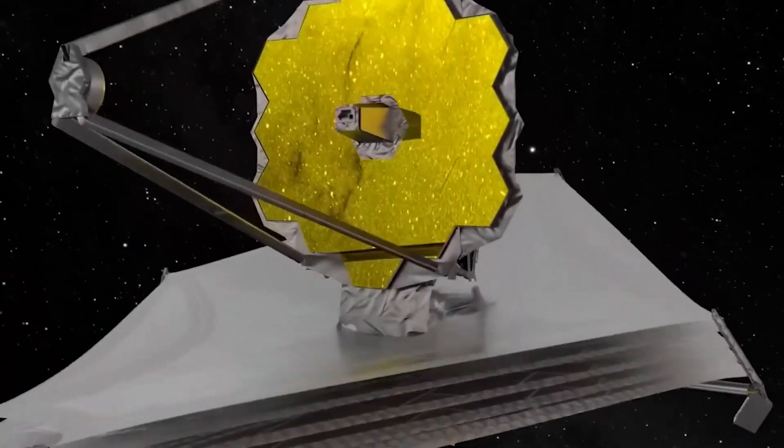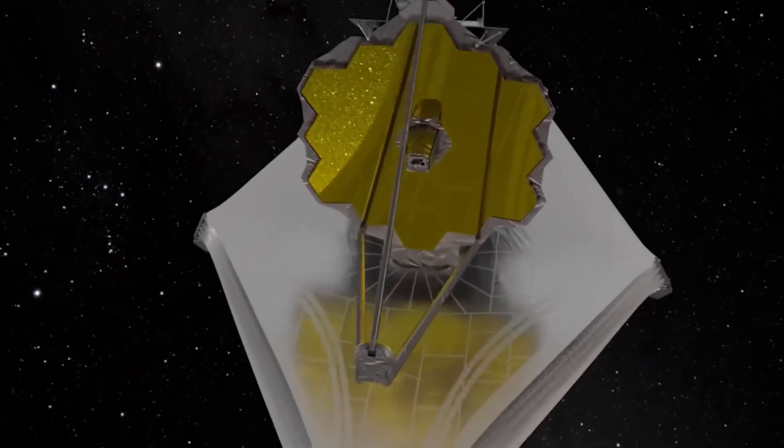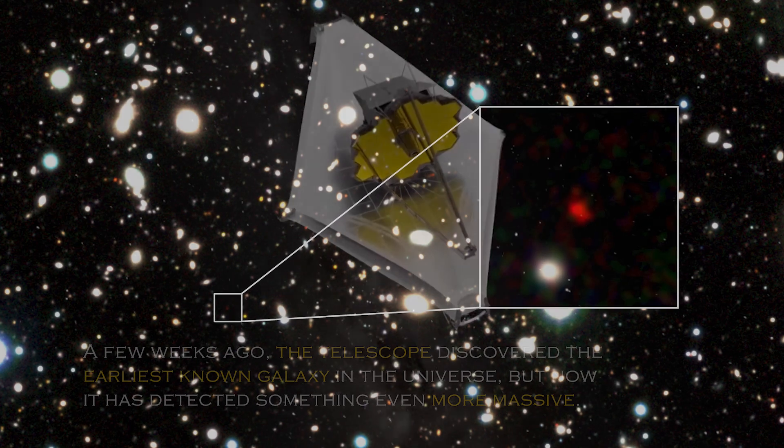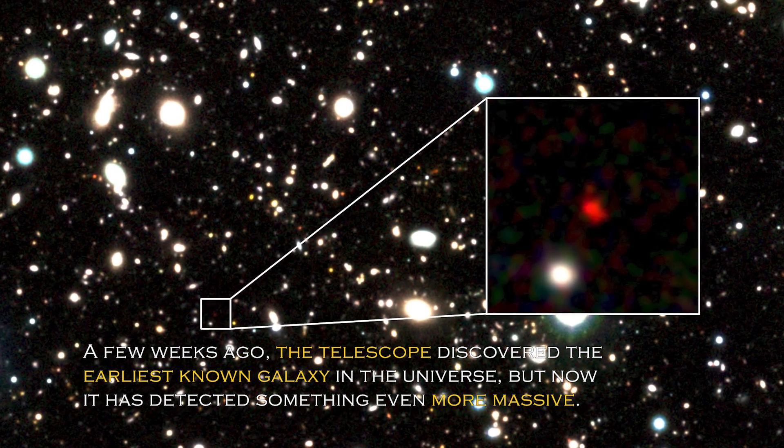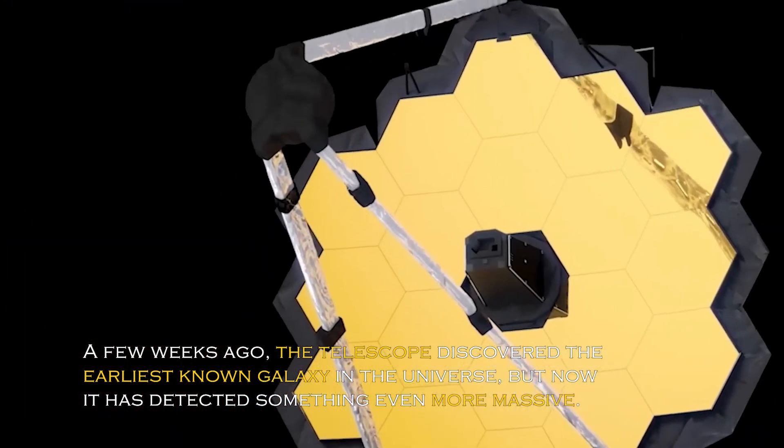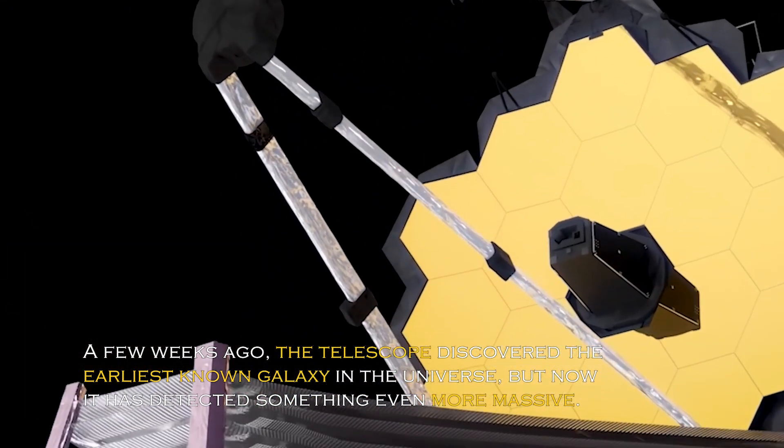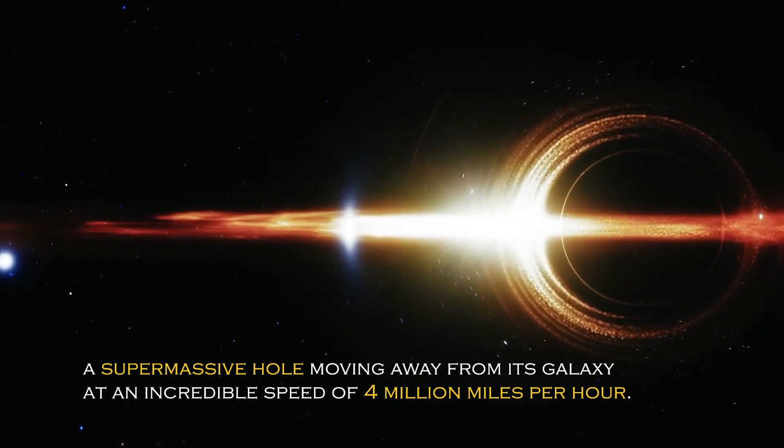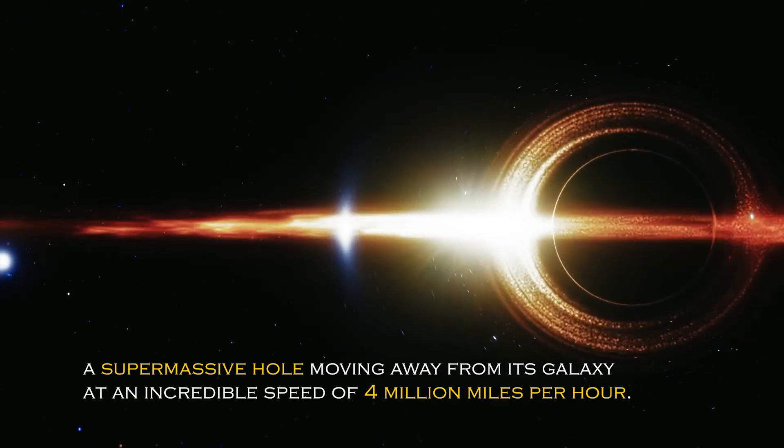In a surprising turn of events, NASA's James Webb Space Telescope has made a discovery that has astronomers around the world in awe. A few weeks ago, the telescope discovered the earliest known galaxy in the universe, but now it has detected something even more massive – a supermassive black hole moving away from its galaxy at an incredible speed of 4 million miles per hour.